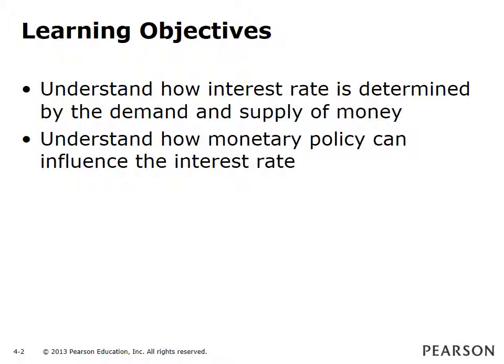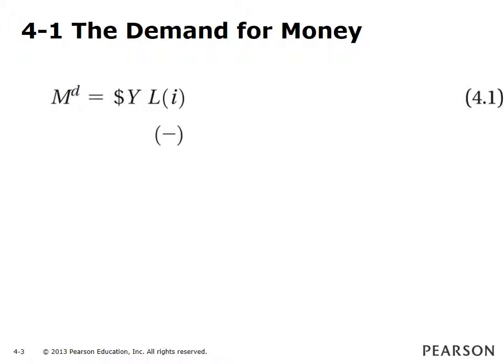Learning Objectives: Understand how the interest rate is determined by the demand and supply of money. Understand how monetary policy can influence the interest rate. Equation 4.1 shows the demand for money is equal to nominal income times a function of the interest rate. The demand for money increases in proportion to nominal income, and it depends negatively on the interest rate on bonds.